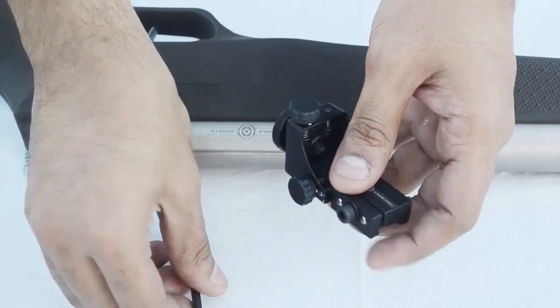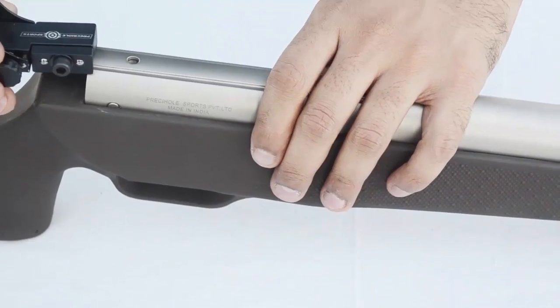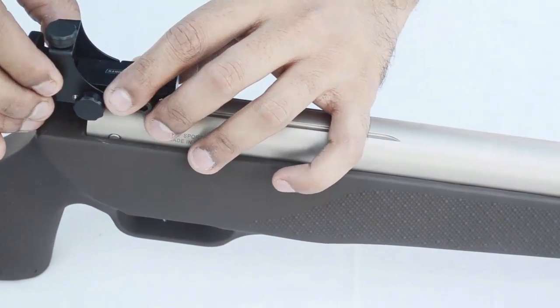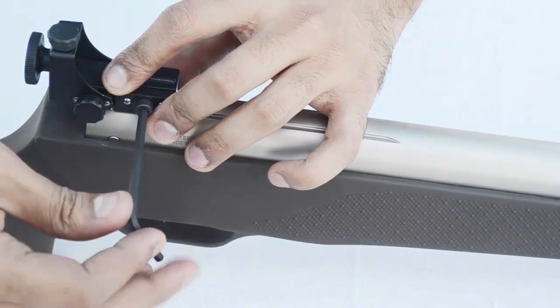Loosen the screw on the rear PeepSight and slide it onto the ducktail. Tighten the screw.